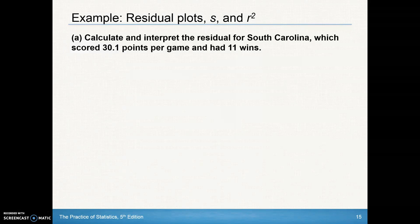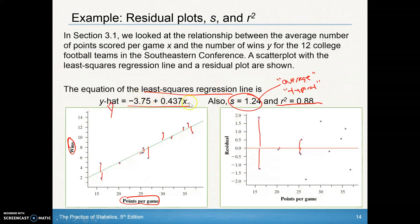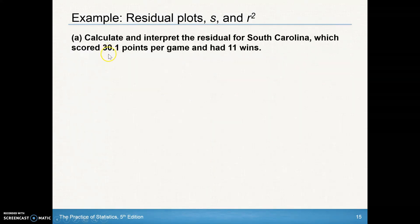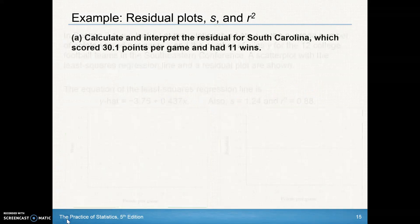Let's go through this example. We're going to calculate and interpret the residual of South Carolina, which scored 30.1 points per game and had 11 wins. We're going to use this regression equation to predict. If Carolina scored 30.1 points per game, looking at the line, it would probably expect about maybe 8, 9 wins.